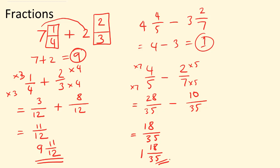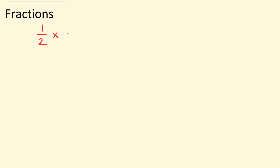Next, let's have a look at multiplying and dividing fractions. Let's look at multiplying fractions first. Say if you multiply half by a quarter. The rule of multiplying fractions is you multiply the numerator by the numerator and the denominator by the denominator. So one times one is one, and two times four is eight — one eighth.